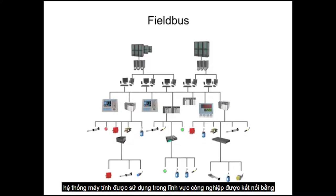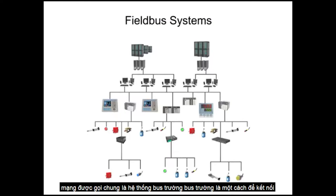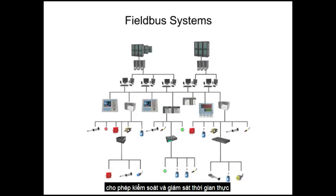Computer systems used within the industrial sector are connected by networks known generally as fieldbus. Fieldbus systems are a way to connect computers and instruments to a single network in a manufacturing plant and allow for real-time control and monitoring.